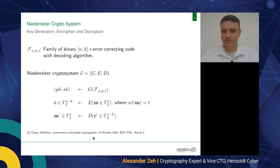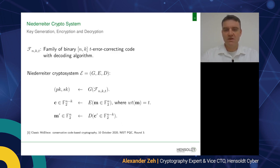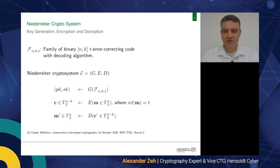The Niederreiter cryptosystem — also called the McEliece cryptosystem — uses a binary t-error correcting Goppa code of length n and dimension k, and is also used in the NIST round three submission. It consists of three steps: key generation g produces public key pk and secret key sk; the encryption function takes a vector of length n and Hamming weight t and transforms it into a ciphertext of length n minus k; and the decryption function maps the ciphertext back to the message.